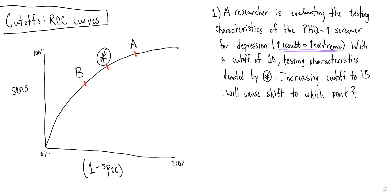So first, we remember for an ROC curve, anytime we make the cutoff more extreme, we are moving down and to the left. So if you just remember that general principle, you would quickly be able to say that we must be shifting from the star to B.